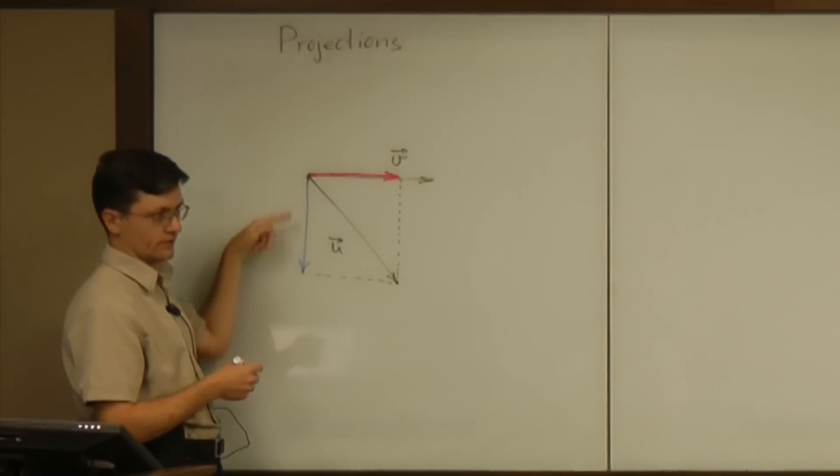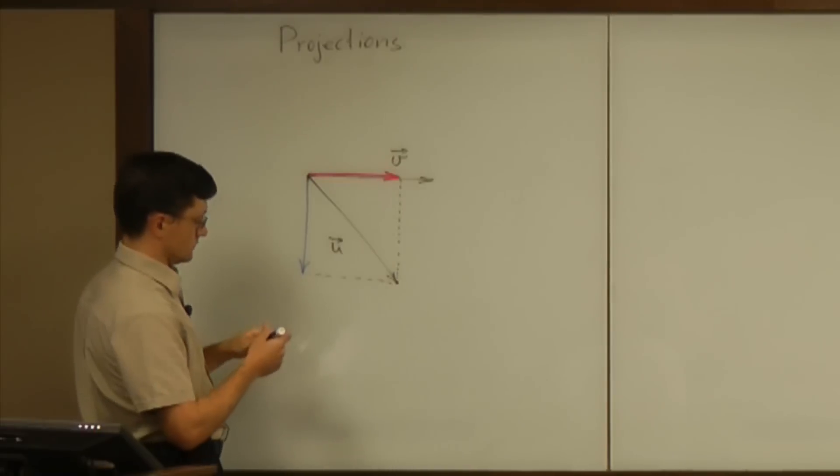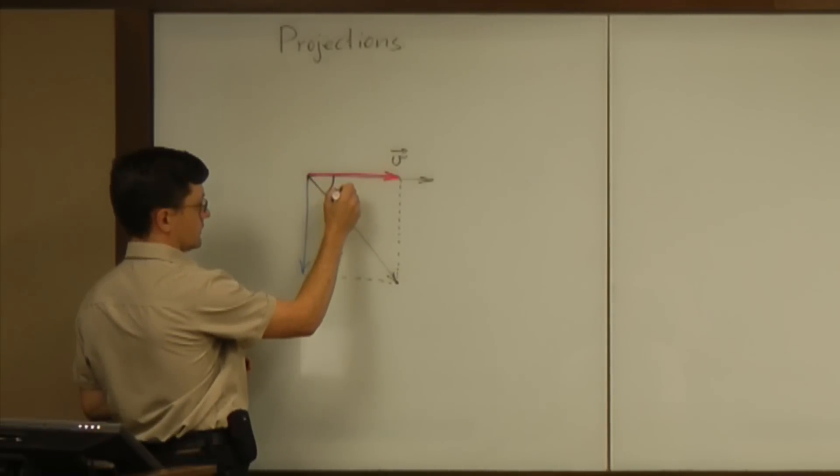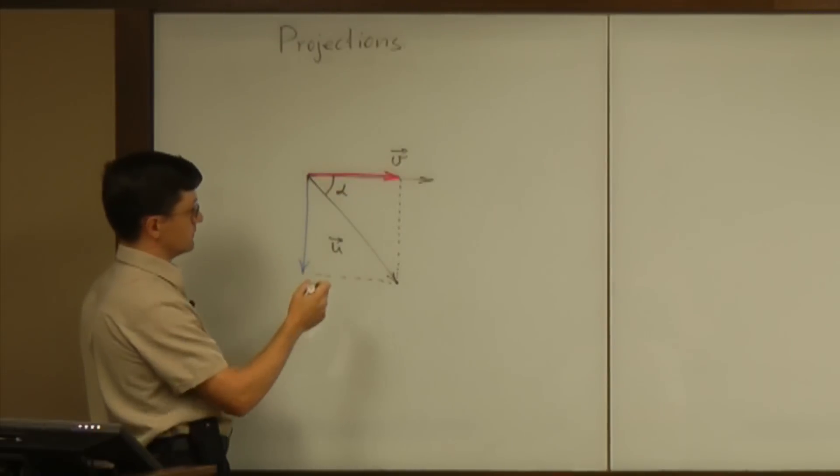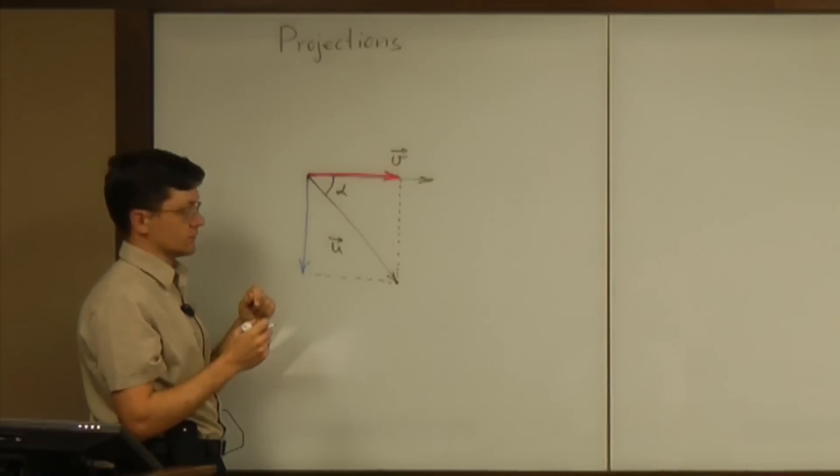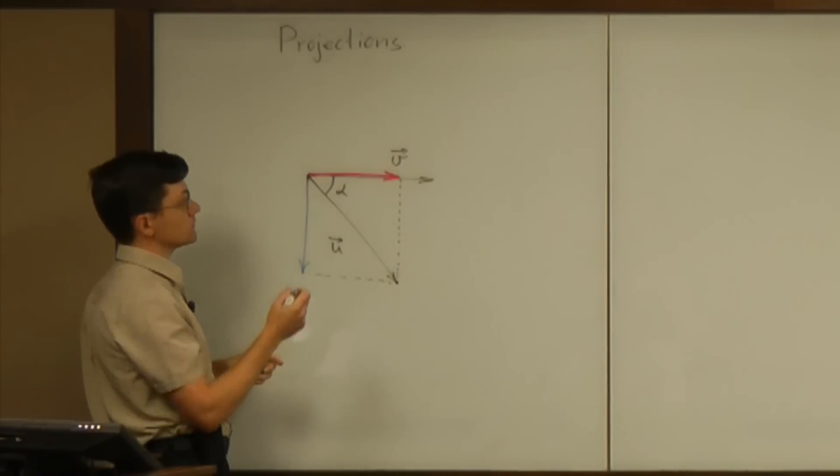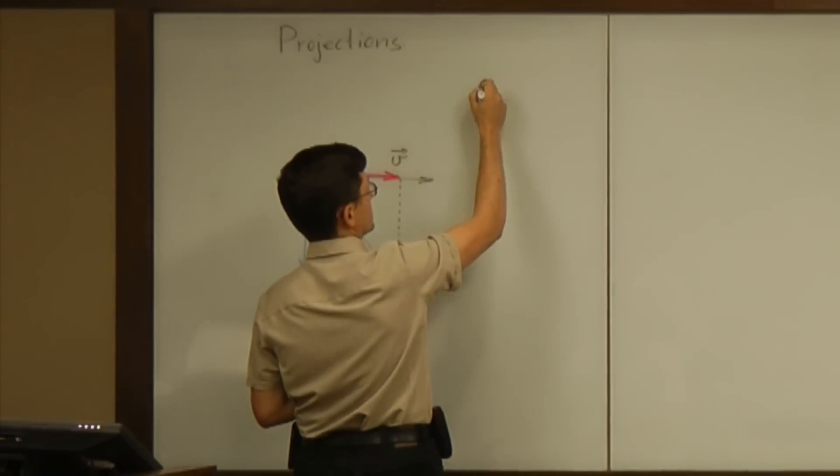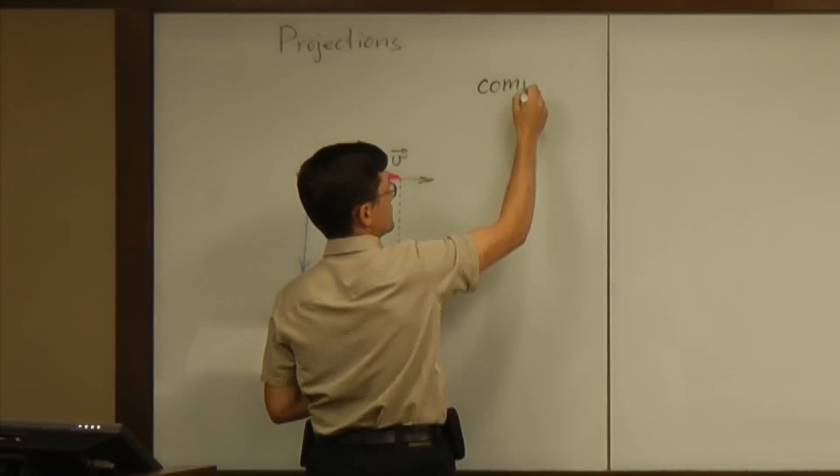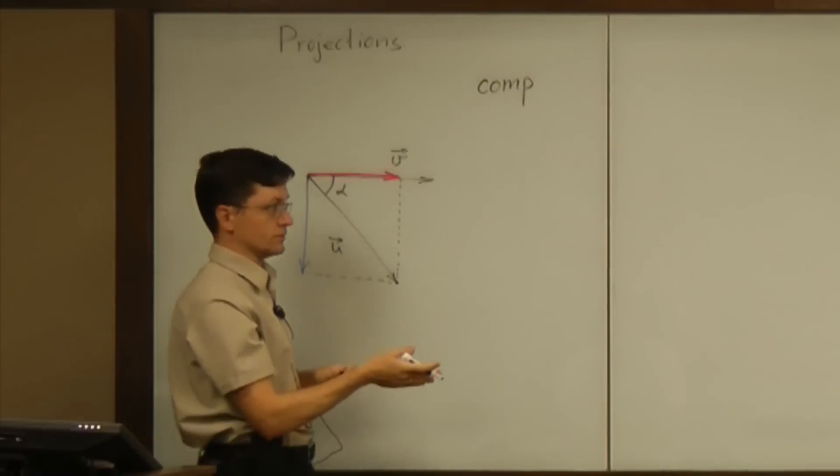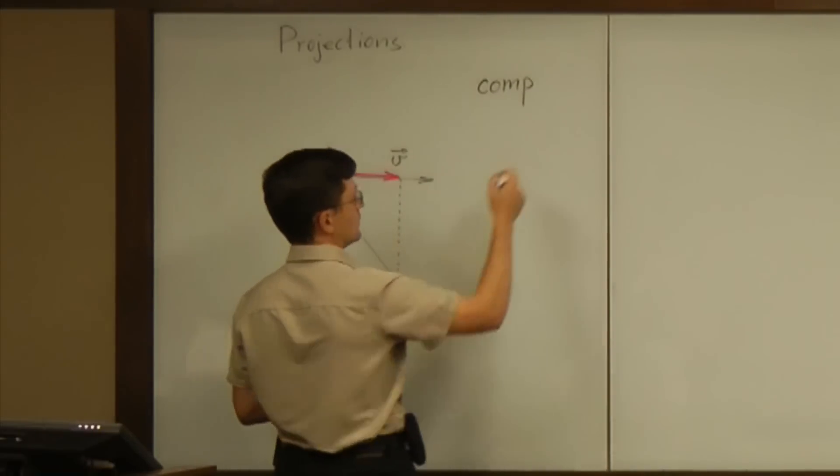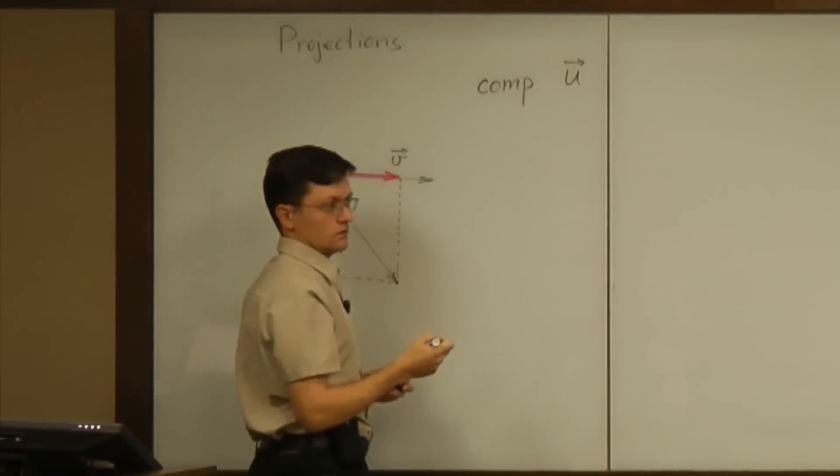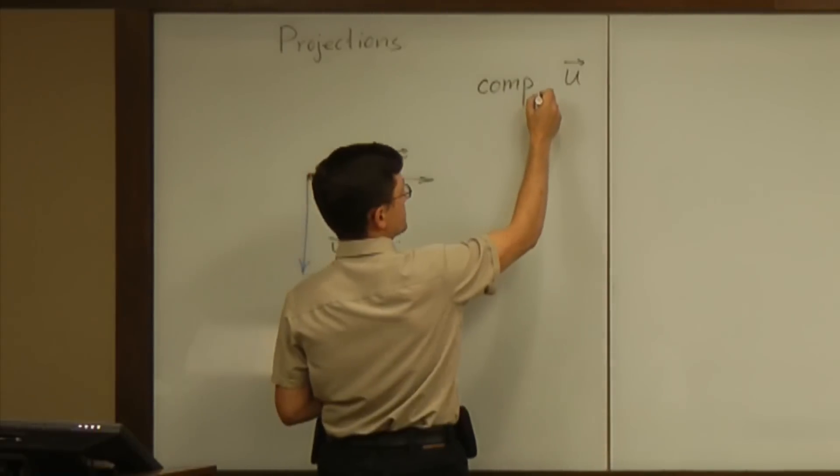So our purpose now is to compute both things. And first of all we will compute the useful part. So to compute that we will need of course that angle, let's call it alpha. And then the magnitude of this useful part of the force is going to be called the component. This is the notation that we will use for the whole semester: component of the vector u in the direction of the vector v.